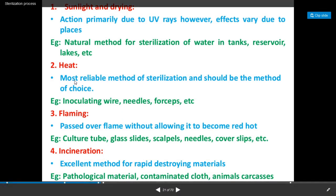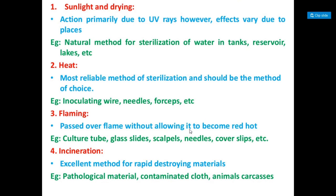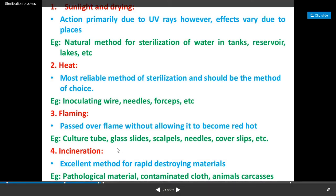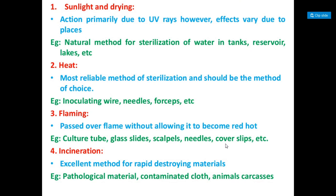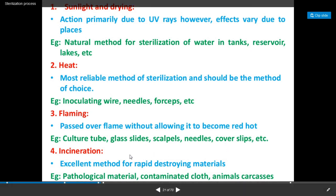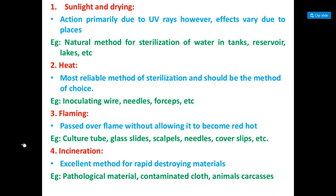The second dry heat method is red heat — it is the most reliable method of sterilization and should be the method of choice. Examples are inoculating wire loops, needles, and forceps. Third is flaming — passing over a flame without allowing it to become red hot. For example, to sterilize a nichrome wire loop, you pass it through a Bunsen burner flame, or culture tubes can be sterilized by passing through the flame. Also glass slides, scalpels, needles, and coverslips can all be sterilized by passing through Bunsen burner flame. Then incineration — this is an excellent method for rapidly destroying materials such as pathological materials, contaminated cloths, or animal carcasses.